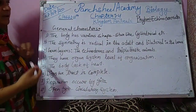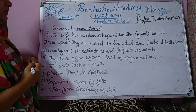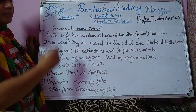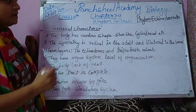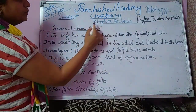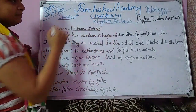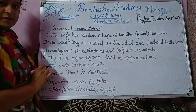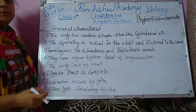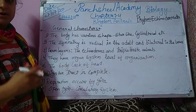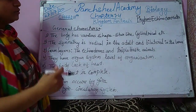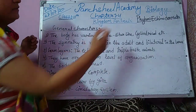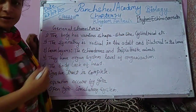Hello dear students, today in this class we are discussing Biology chapter number 4, that is Animal Kingdom from Class 11. In the previous video we discussed about phyla, so today we are discussing about phylum Echinodermata.